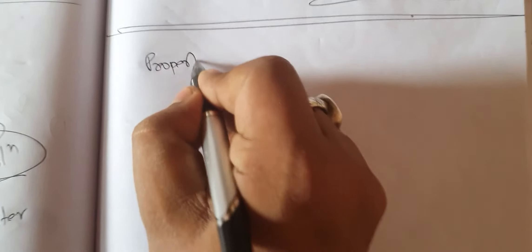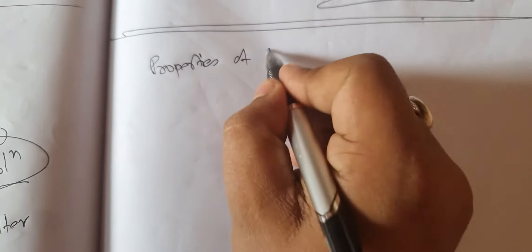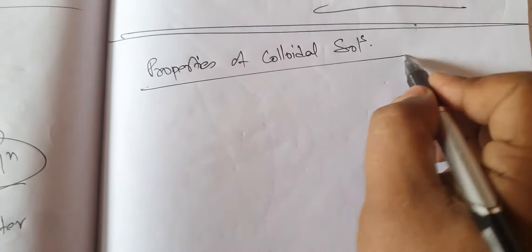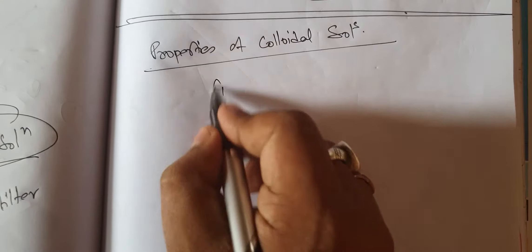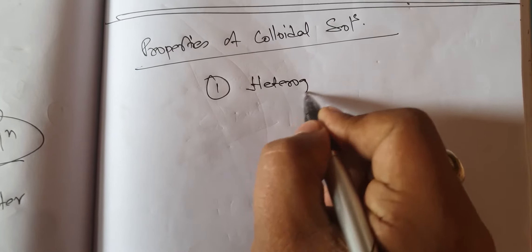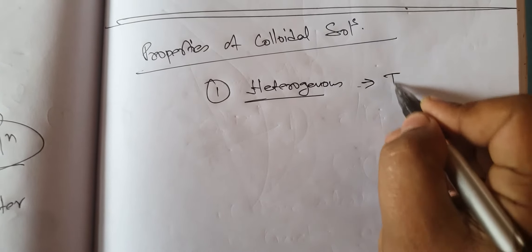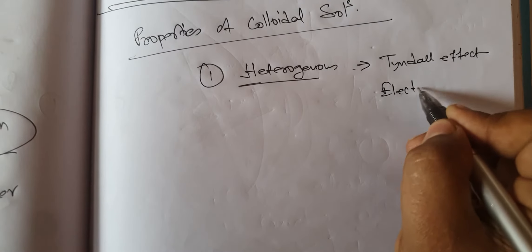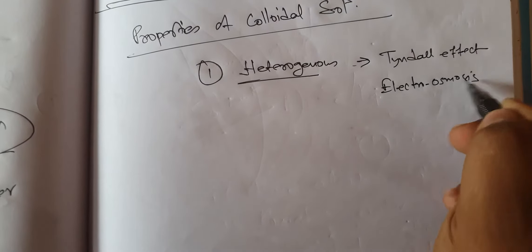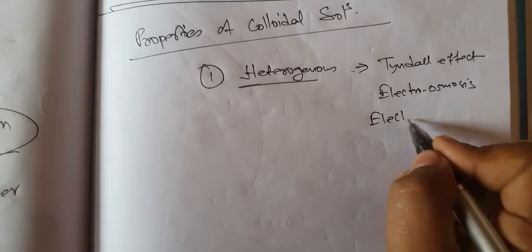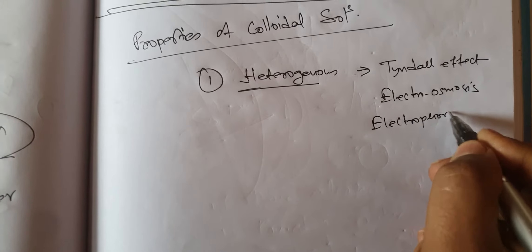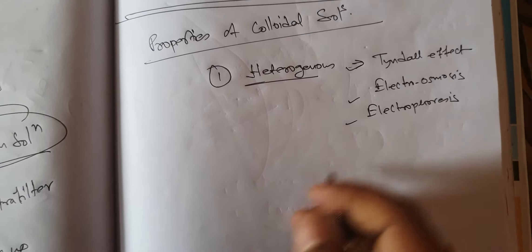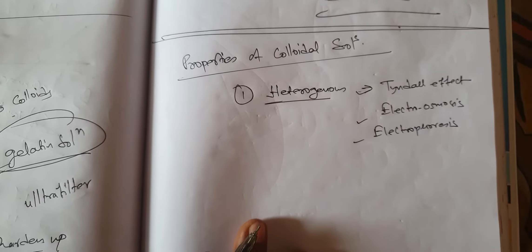We will learn about the properties of colloidal salts. First, they are heterogeneous. They are heterogeneous because you can see the Tyndall effect, electroosmosis, and electrophoresis. These processes and techniques are applied on the colloidal solution and they confirm the heterogeneity of the colloidal particles.